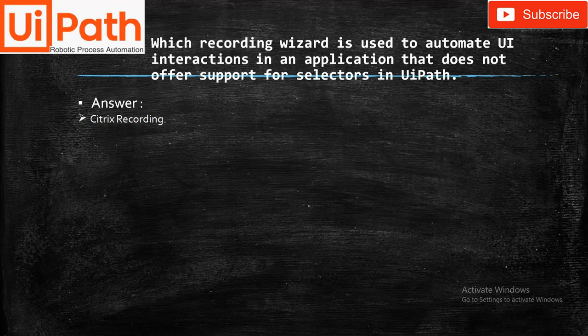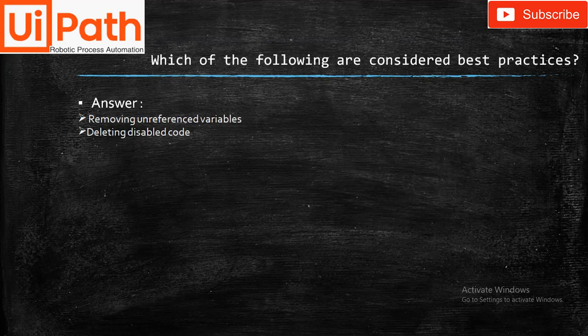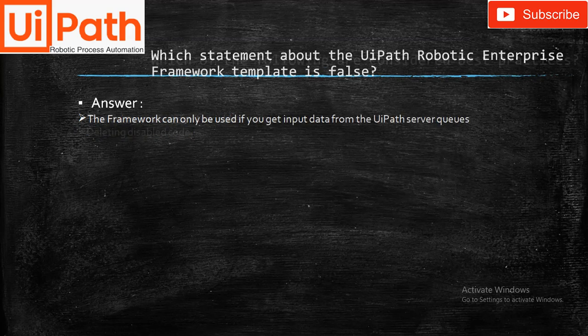Which recording wizard is used to automate UI interaction in an application that does not offer support for a selector in UiPath? The answer is Surface Recording. Which of the following are considered best practices? The answer is: removing unreferenced variables and deleting disabled code.